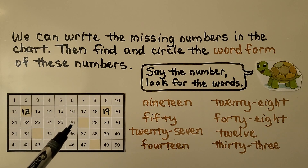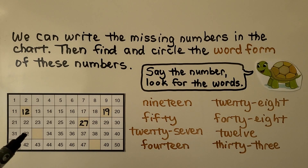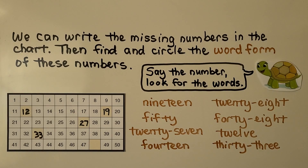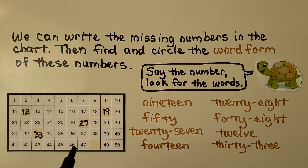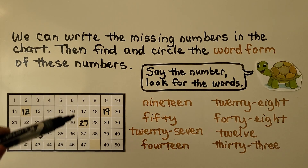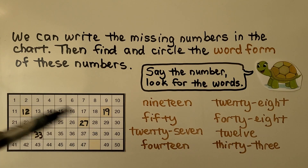We have eighteen, so the next number would be nineteen. Here's a missing number — before it is twenty-six, so counting on by one the next number is twenty-seven. Before thirty-two, the next number is thirty-three. For the last one, forty-six, forty-seven — the numbers above all end with an eight, so it must be forty-eight.